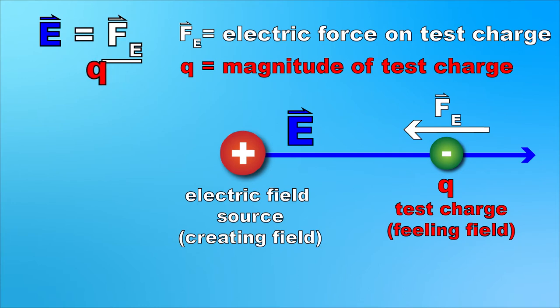You might note that if we rearrange this formula, it looks a lot like the force of gravity formula. Force of gravity equals mass times acceleration due to gravity. This idea of electric field theory is really closely related to gravitational field theory from back in Physics 20.